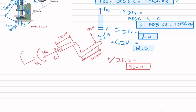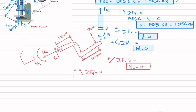Applying another equation of equilibrium: sum of all forces along the y-dash direction equals zero, with force in that direction taken as positive. Along y-dash, we have VE and the 120 N load. The 120 N is positive and VE acts opposite, so VE minus 120 N equals zero, giving VE equals 120 N.